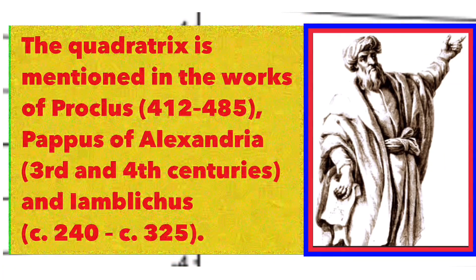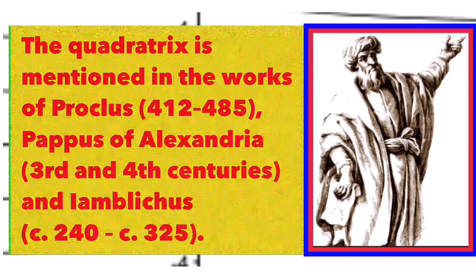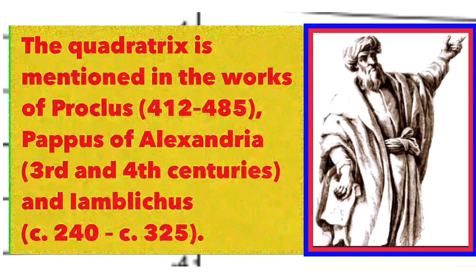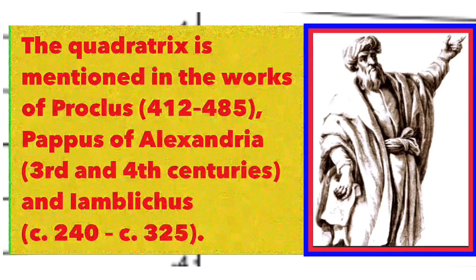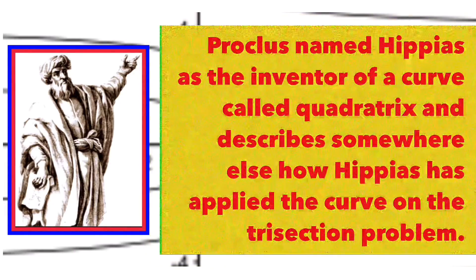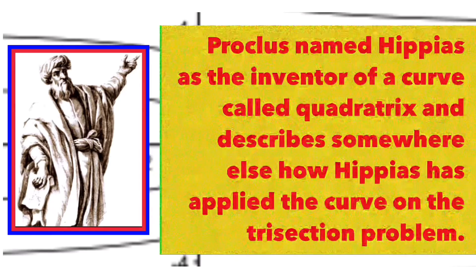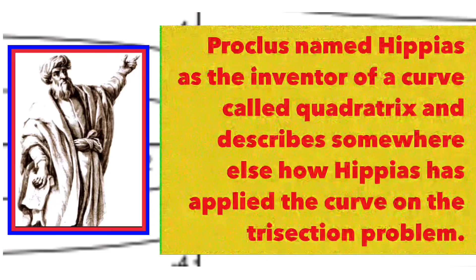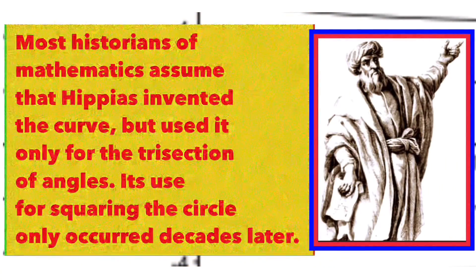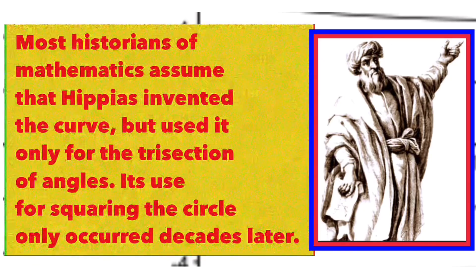The quadratrix is mentioned in the works of Proclus, Pappus of Alexandria, and Iamblichus. However, of all these mathematicians, Proclus named Hippias as the inventor of the curve called quadratrix and described somewhere else how Hippias applied the curve to the trisection problem. Most historians of mathematics then assume that Hippias invented the curve but used it only for the trisection of angles.